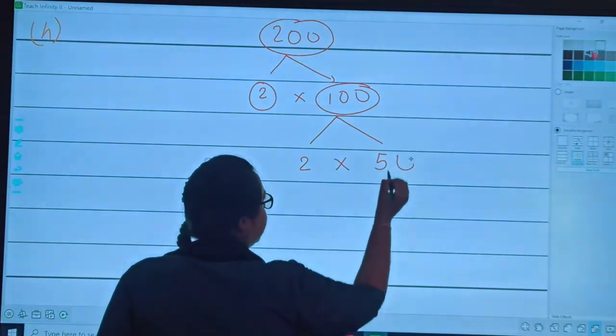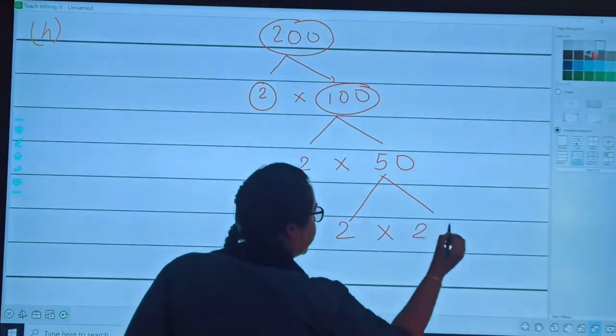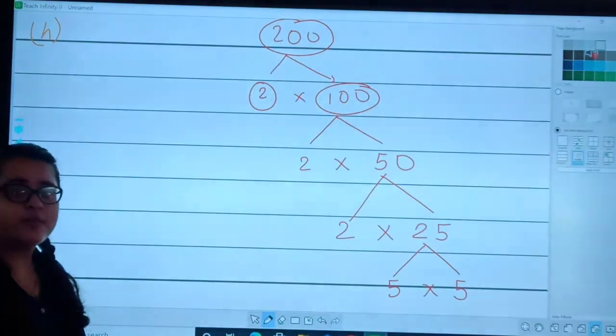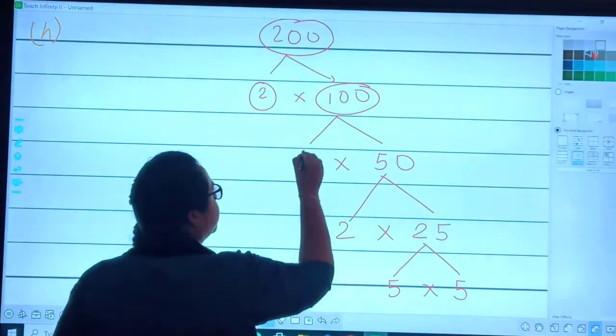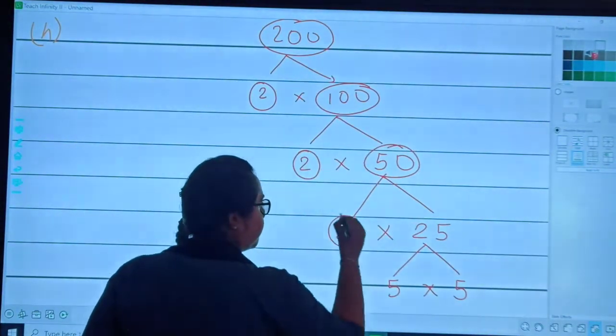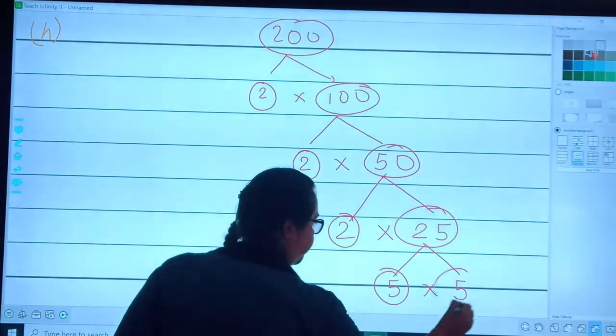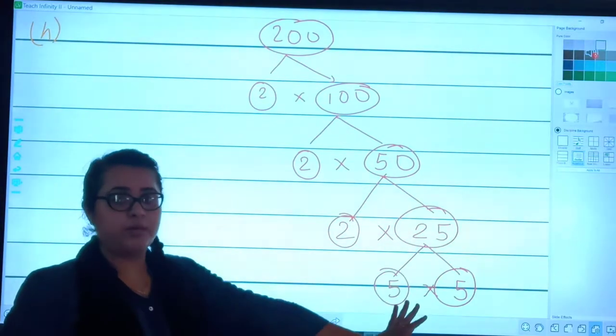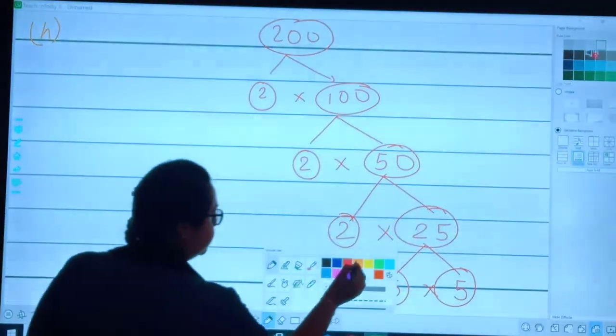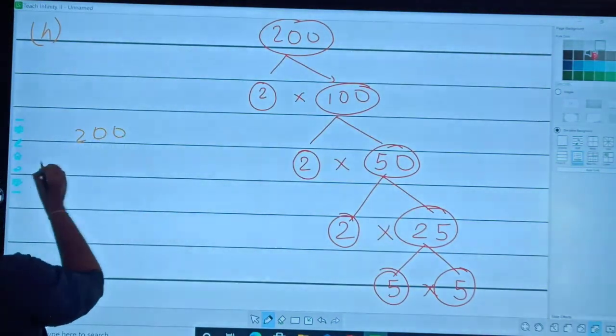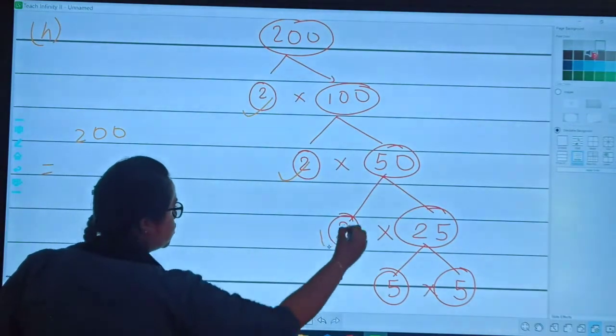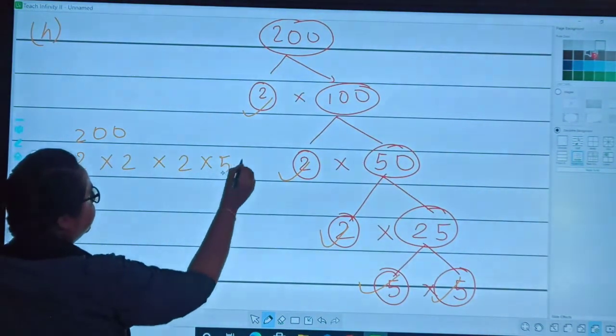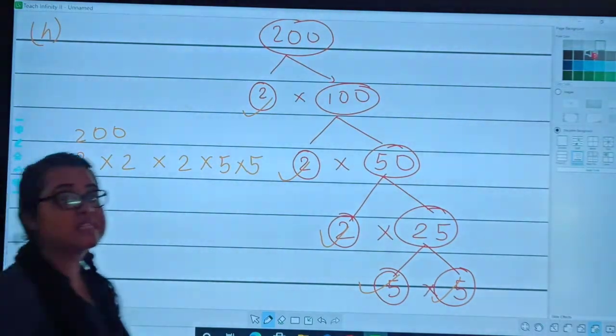2, 100; 2, 50; 2, 25. Here 25 is split as 5, 5. Now I will be doing the decoration part. 200 was my question. My answer will be 2 into 2 into 2 into 5 into 5.